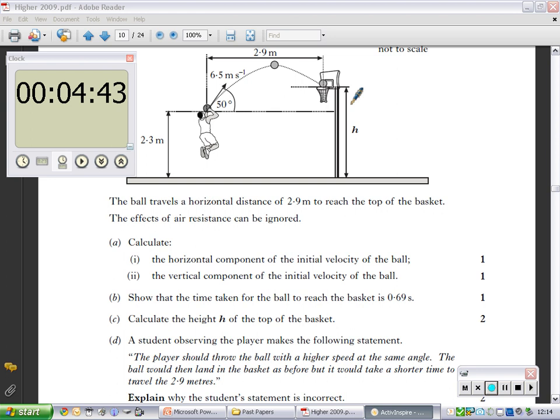A student observing the player makes the following statement: The player should have thrown the ball with a higher speed at the same angle. The ball would then land at the basket as before, but it would take a shorter time to travel the 2.9 meters. Explain why the student's statement is incorrect. You're already told it's incorrect. You get two marks for this, so there's either two pieces of information or four smaller pieces. What's that going to mean for the horizontal displacement or the vertical displacement? You get four minutes to try and discuss that. Talk about what happens in the vertical direction and the horizontal direction.